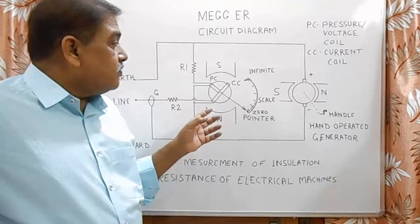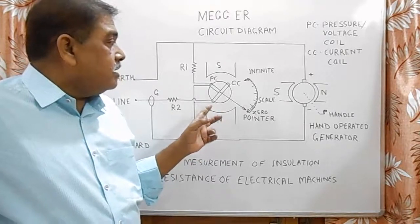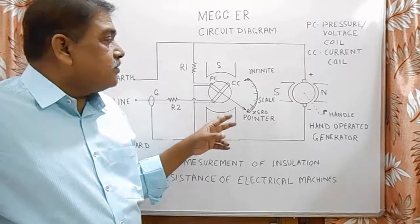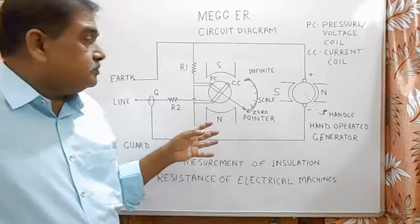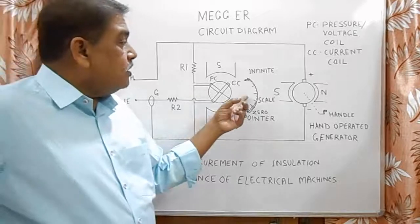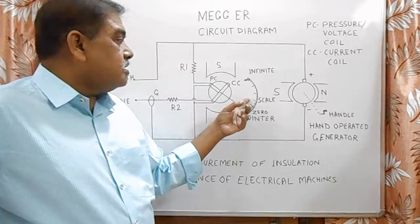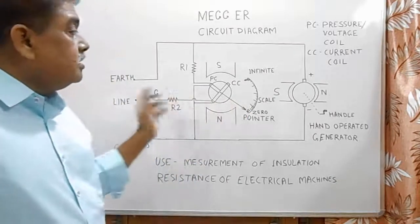So when we measure with the help of Megger, it provides the result as a form of V by I, that is R, and it shows the value of resistance of the external circuit in mega ohms.